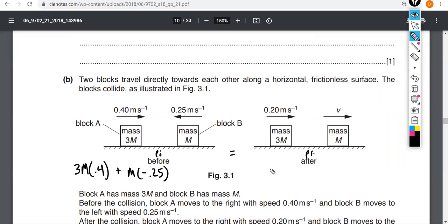The final momentum here, we got this object 3m going at a speed of 0.2. And then we have this object m going at some unknown speed v. So there's your equation. This plus this equals this plus that. Do some algebra now, and let me know what you get for v.